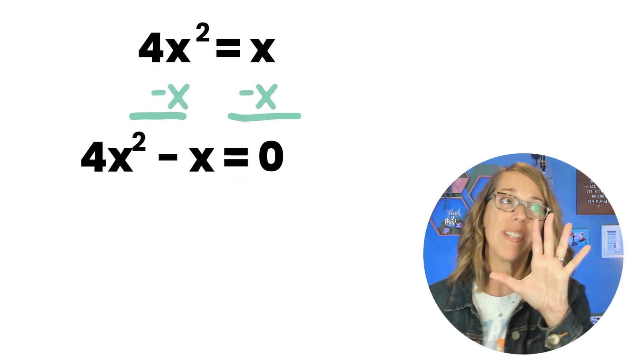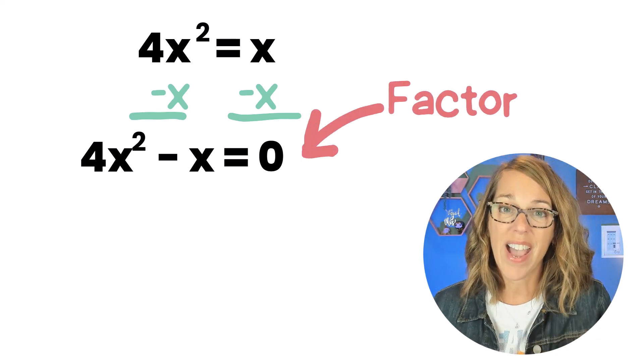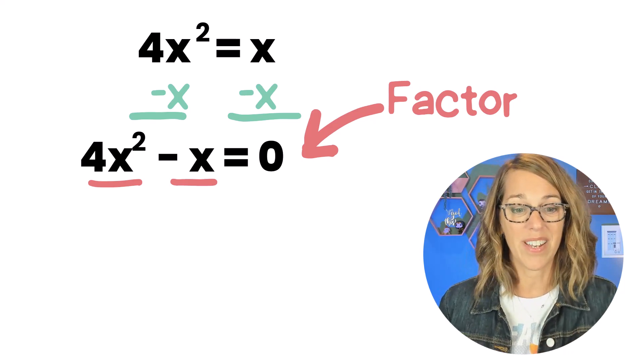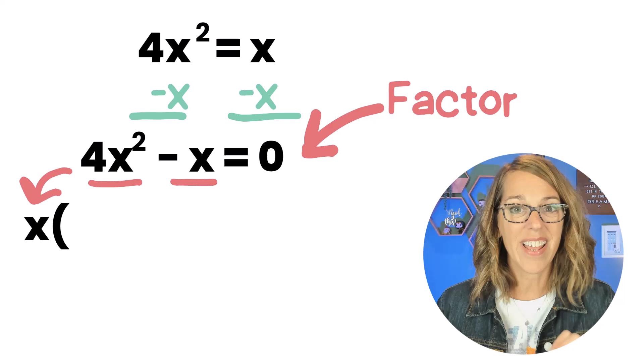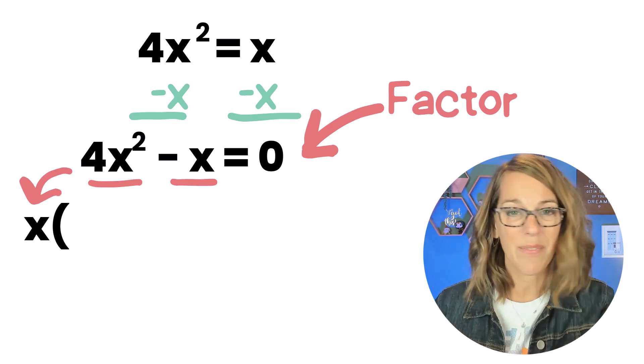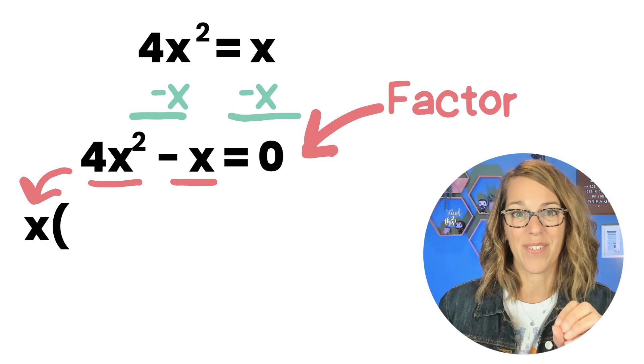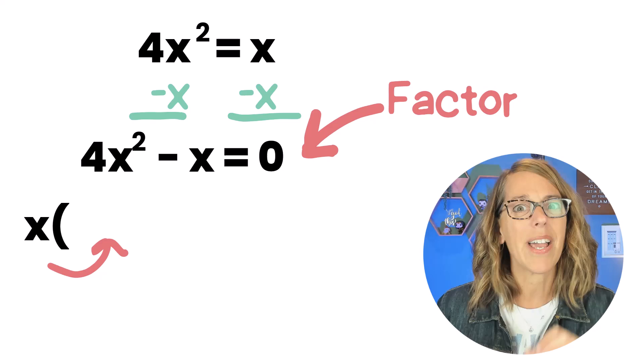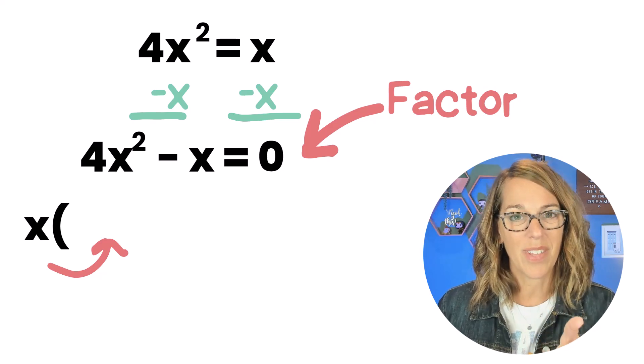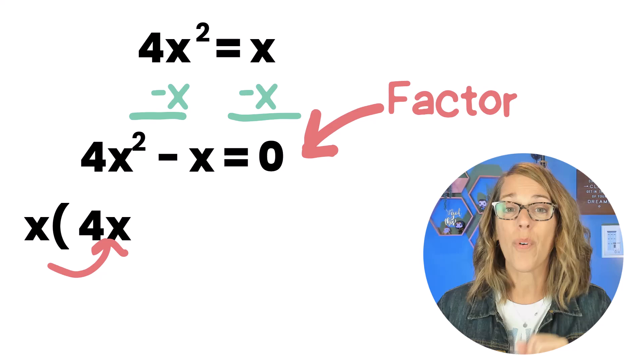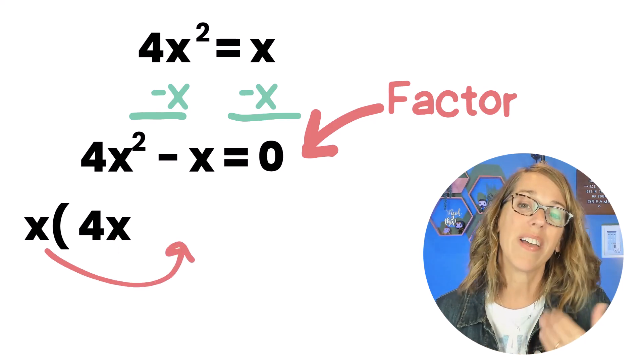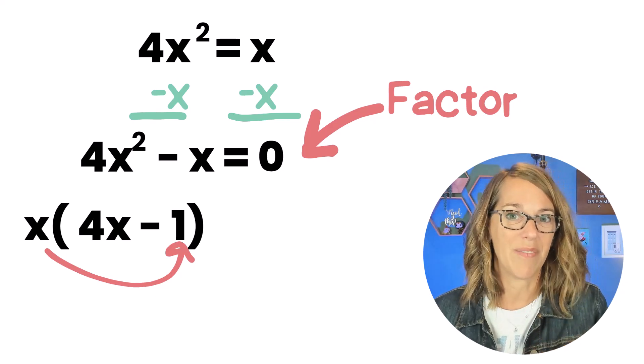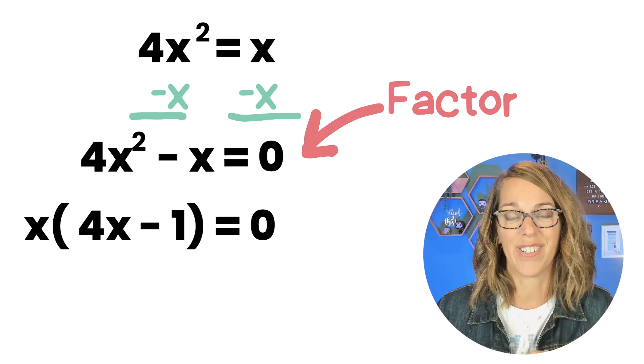And this next step is the most important step. We're going to factor out the left hand side. Notice that both of those terms have an x in common. Let's factor that x out in front. Here we are not getting rid of it. We are keeping it by factoring out in front. Let's see what we've got left over inside those parentheses. We want to know x times what gets us to that 4x². That would be an x times a 4x. And then we want x times what gets us to the negative x. That would be a negative one. We still have our equal zero on the other side.